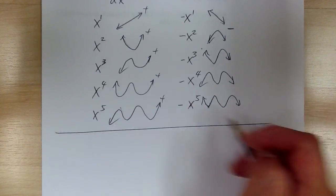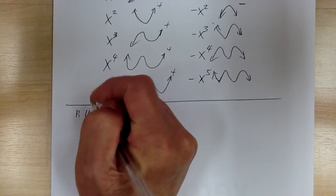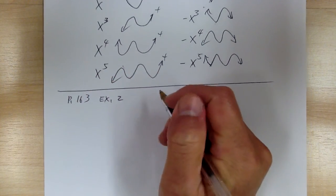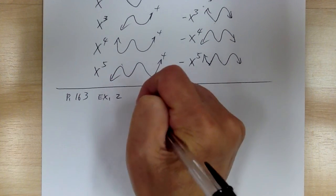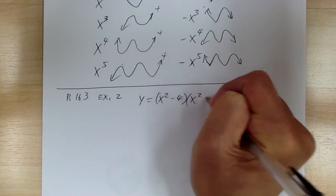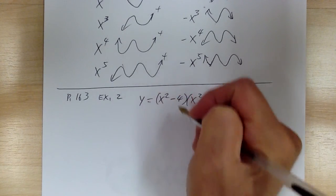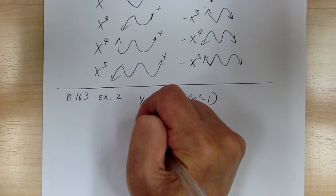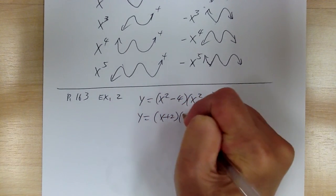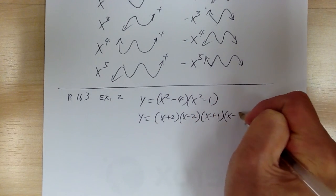Let's go to page 163, example 2. Example 2 has y equal to (x² - 4)(x² - 1). First, let's factor this to get the x-intercepts. So y equals (x + 2)(x - 2)(x + 1)(x - 1).